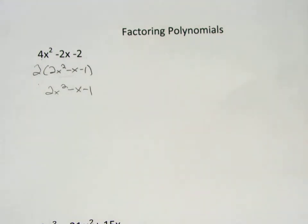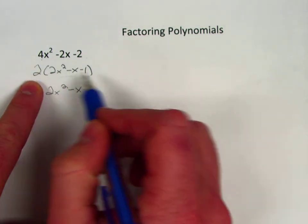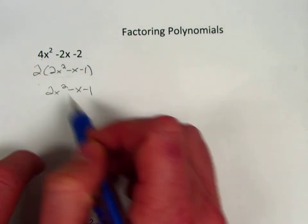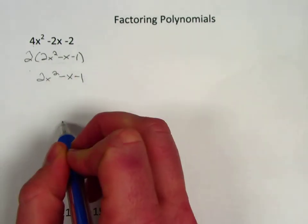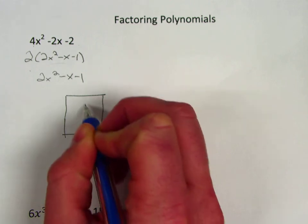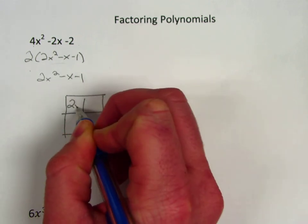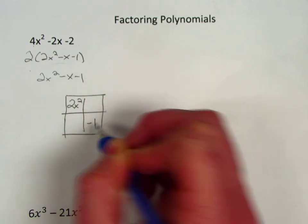So that's really all that's different about this video, is that you have to identify that GCF first and factor it out, because if you don't, your box method won't get you a good answer. So let's take it from here. I'm going to draw my box. My first term goes up here, my constant goes down there.